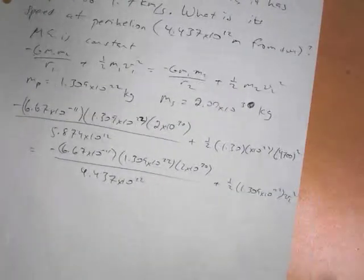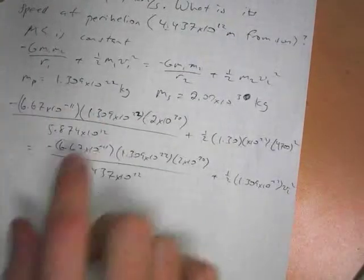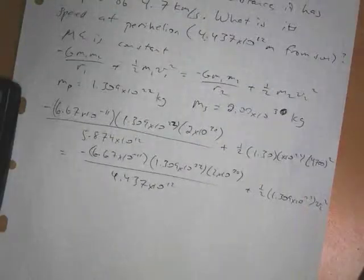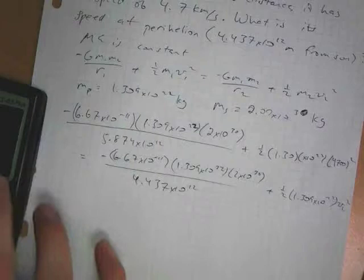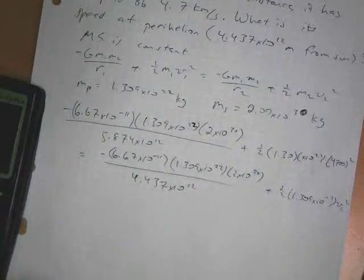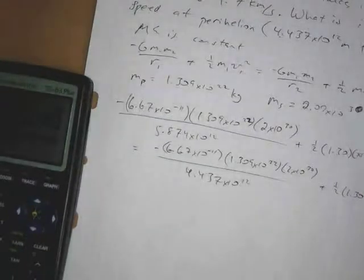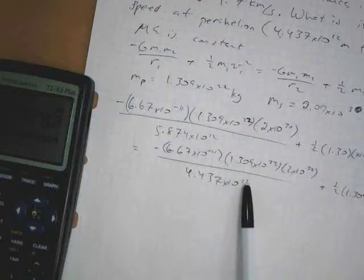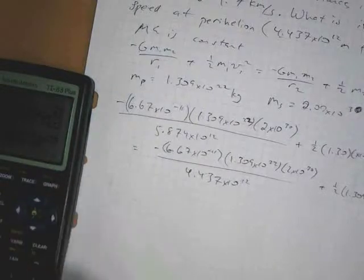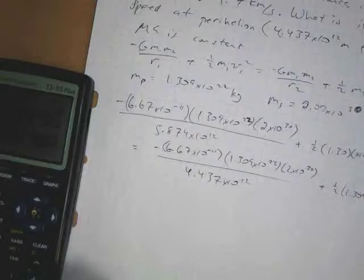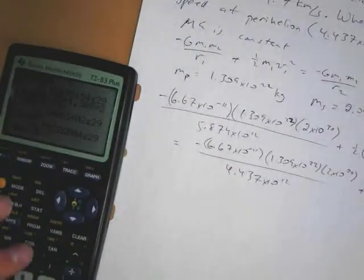This is going to be a pain to punch in, but we can work it out. This is 10 to the 52, 10 to the 41 minus 12 is 10 to the 29th, so 6.67 times 1.309 times 2 times 10 to the 29th, over 5.874, negative, plus 0.5 times 1.3 E22 times 4,700 squared. And then on the other side, we have the same, 52 minus 23, we also have 29 powers of 10. So we plot 6.67 times 1.309 times 2 E29, divided by 4.437, times 2, divided by the mass, square rooted.